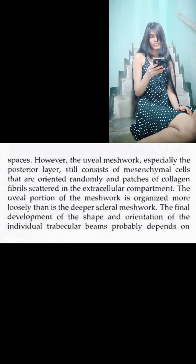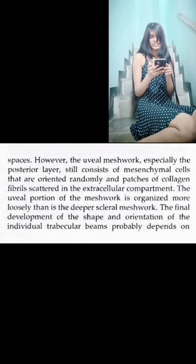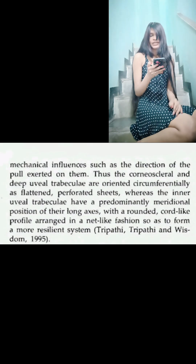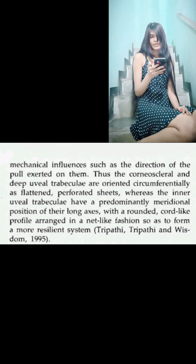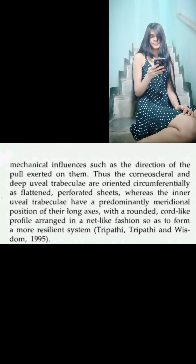The uveal portion of the meshwork is organized more loosely than the deeper scleral meshwork. The final development of the shape and orientation of the individual trabecular beams probably depends on mechanical influences such as the direction of the pull exerted on them. Thus, the corneoscleral and deep uveal trabeculae are oriented circumferentially as flattened perforated sheets, whereas the inner uveal trabeculae have a predominantly meridional position of their long axis, with a rounded cord-like profile, arranged in a net-like fashion so as to form a more resilient system.